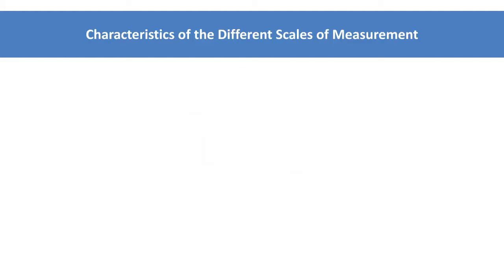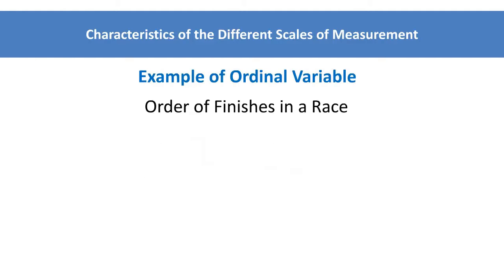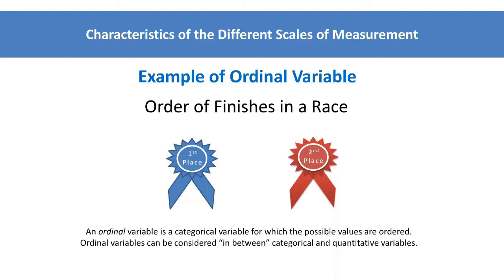An example of an ordinal variable is the order of finishes in a race. For instance, we can say that Tanisha finished first and Alexis finished second. However, we do not know the degree of difference. It could be that Tanisha won by two seconds or twenty minutes.